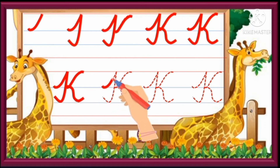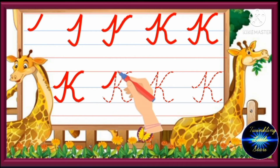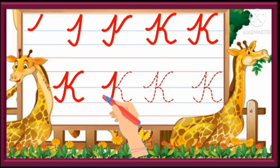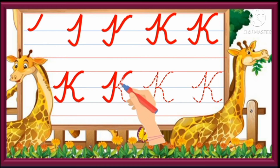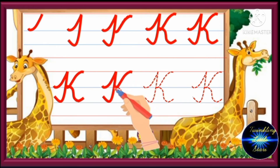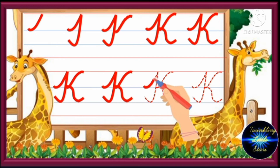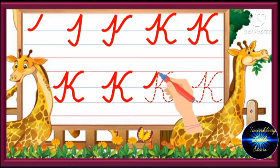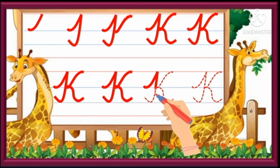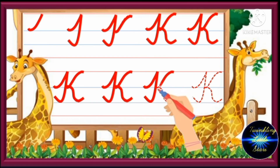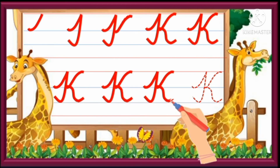Draw a half up curve. Draw a slant line then an up curve. Draw a little down curve then a slant line. Draw a half down curve then a half up curve.